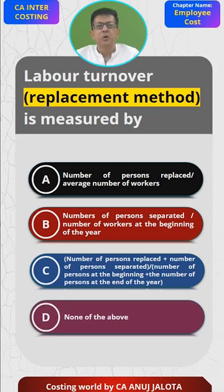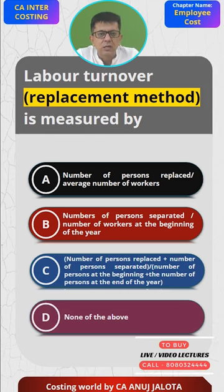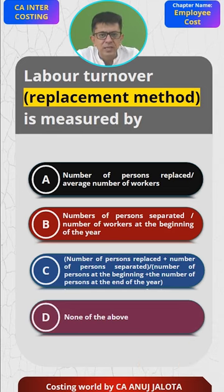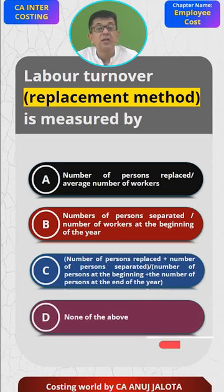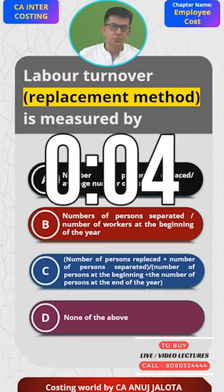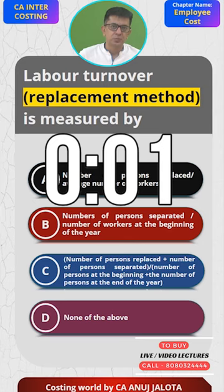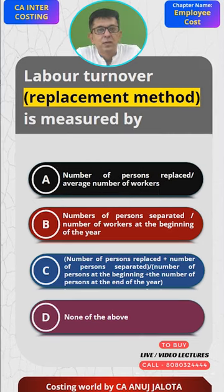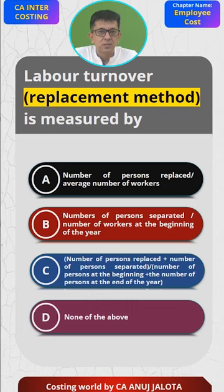Option D is none of the above. You all have done labor turnover under many options, but before I give my explanation, pause the video here and try to put the correct answer in the comment section. Leave your answer in the comments — it's always better that you were the one who answered correctly.